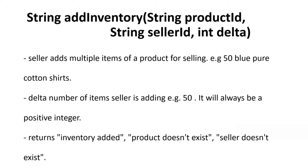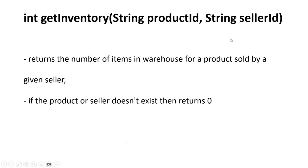Next is add inventory. Once a product has been created in the system, multiple sellers can add inventory for the product if they wish to sell it — for example, a seller decided to add 50 blue pure cotton t-shirts in its inventory. This delta value will always be a positive integer. Next is get inventory: we want to check how many items for a particular product a particular seller has in their warehouse.